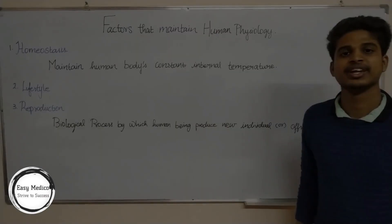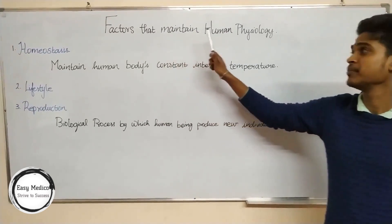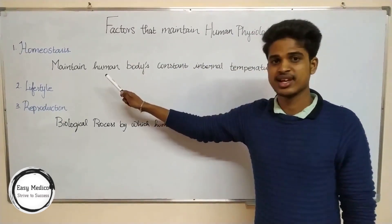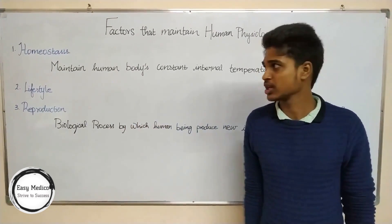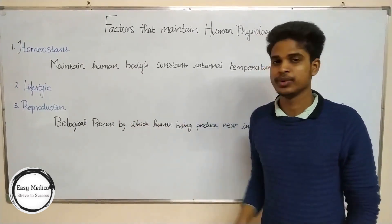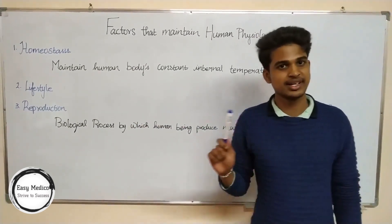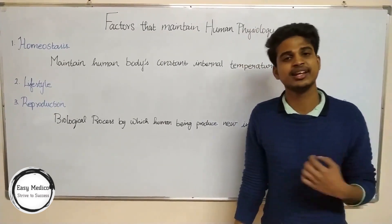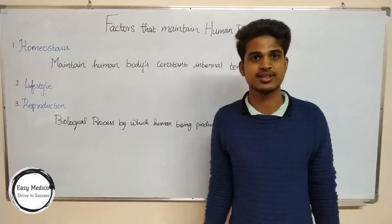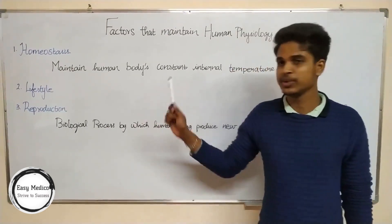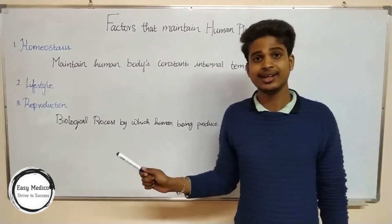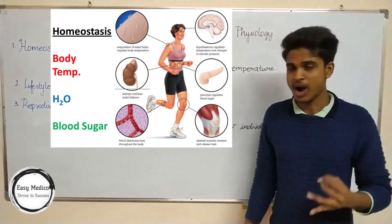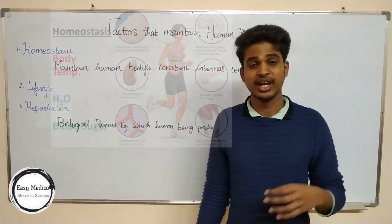Now we can move on to factors that maintain human physiology: homeostasis, lifestyle, and reproduction. What is homeostasis? Whatever the external temperature may be, homeostasis is the ability to maintain a constant internal temperature. Homeostasis maintains an optimum level of body fluid, water, and minerals in our body.